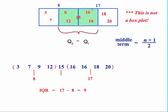Notice here that those two values, the 8 and the 17, were not data points. Again, there's no set rule. It just depends on where the data falls as to whether the values for the first and the third quartiles are data points or not. And again, this is not a box plot. It's just a visual representation of our data in this case.